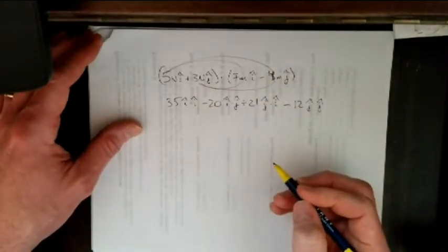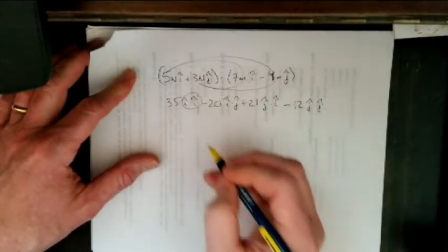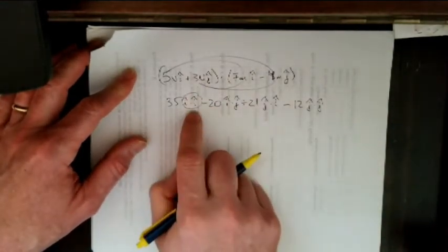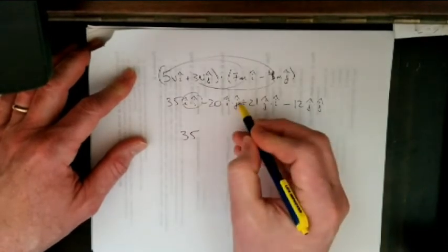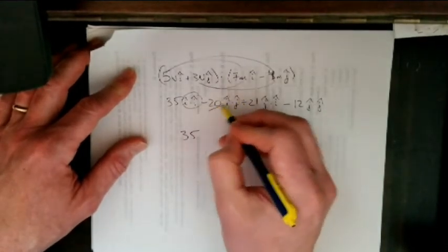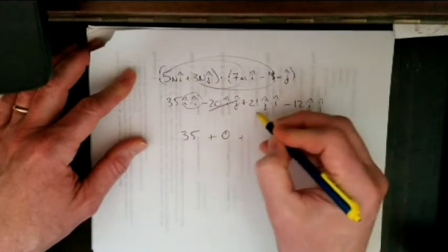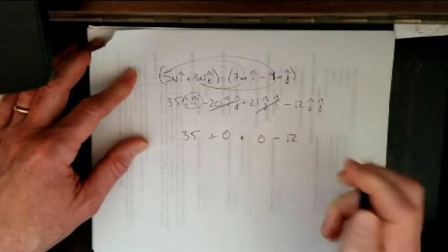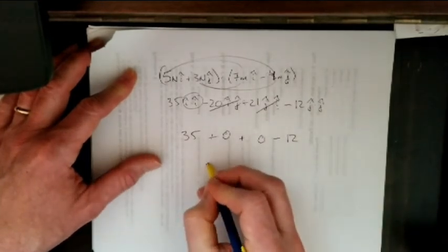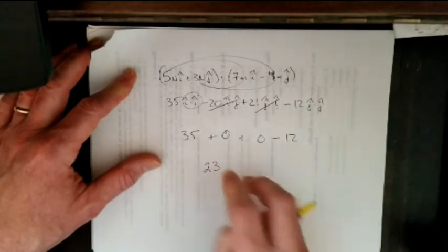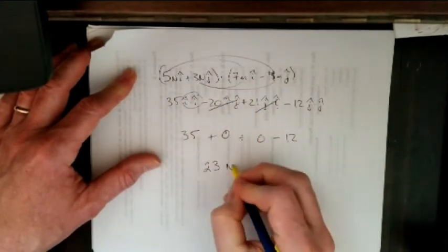Since dot products care about multiplying parallel components, well, those are parallel to each other. So i hat dot i hat is 1. So this becomes 35. I hat dot j hat, that's perpendicular, so that is 0. That is 0 because they're perpendicular to each other. Minus 12 times 1. And so I end up with 35 minus 12, which is 23. And let's not forget units, it is newtons times meters, so newton meters. And so that's the quick review of dot products.